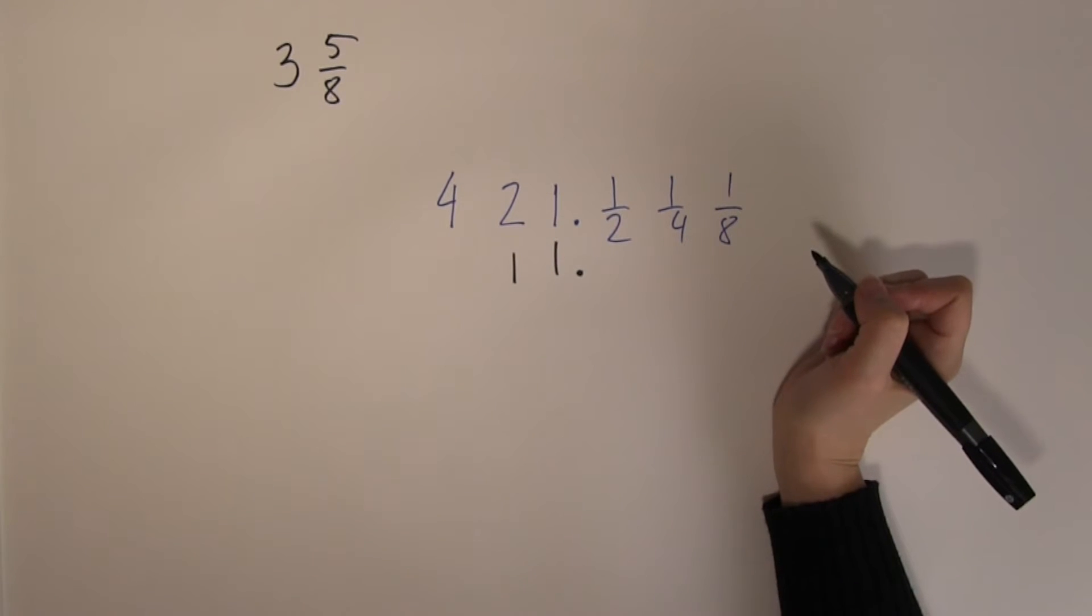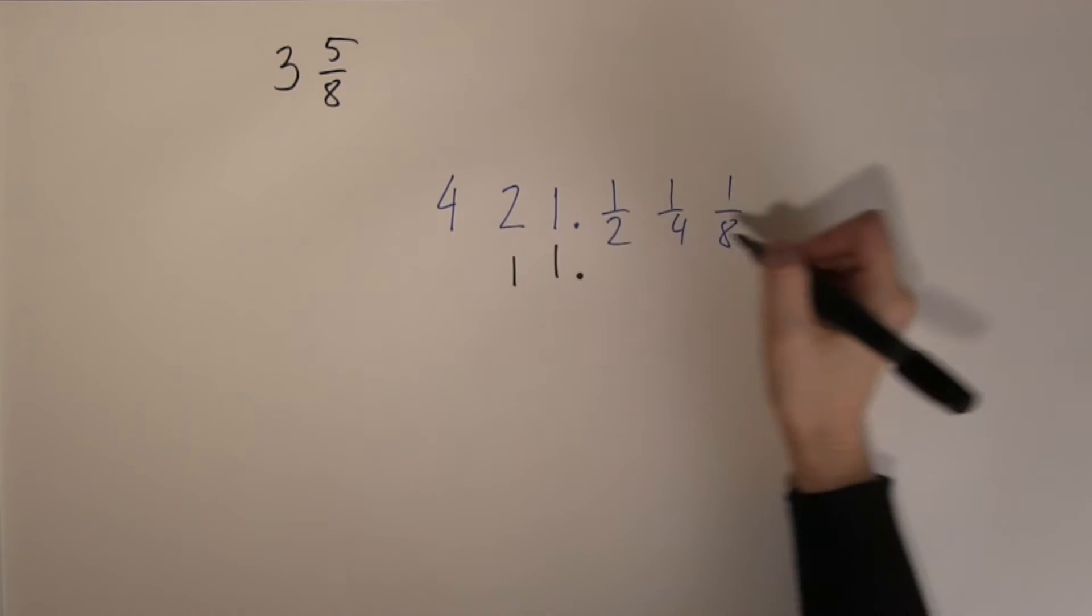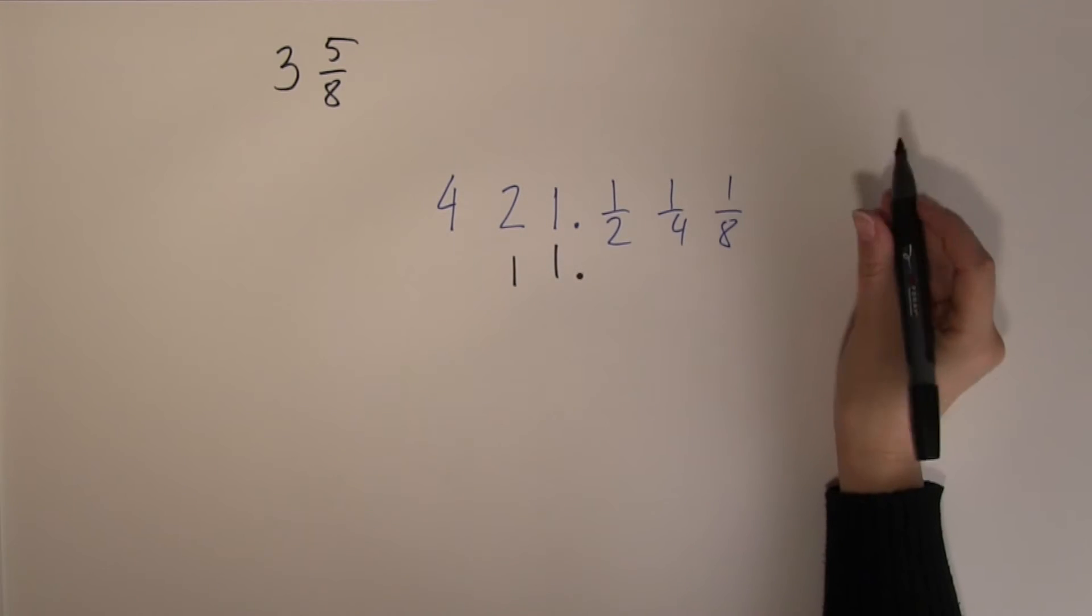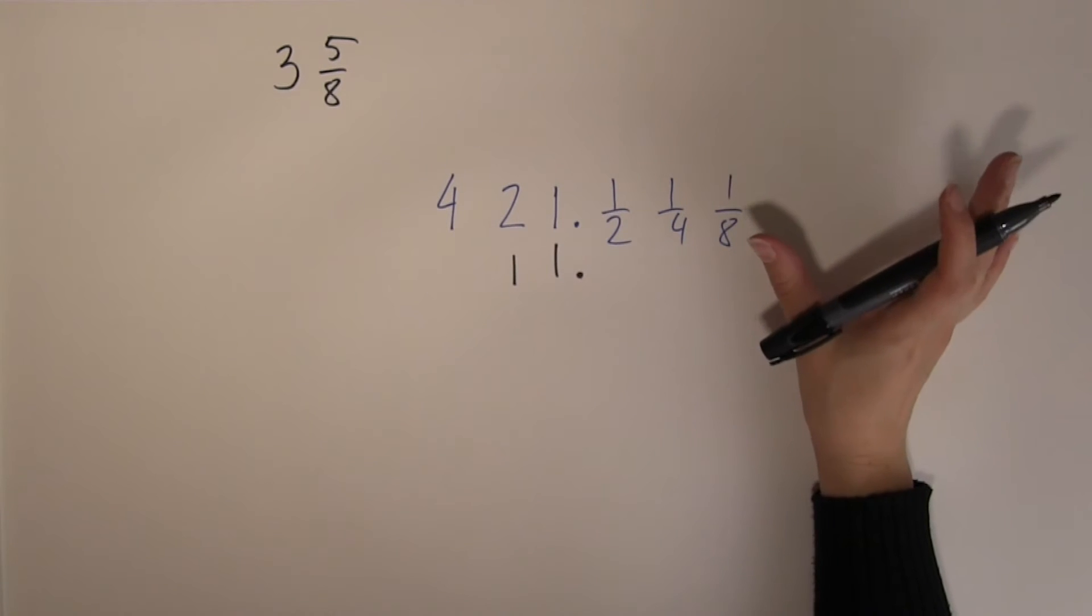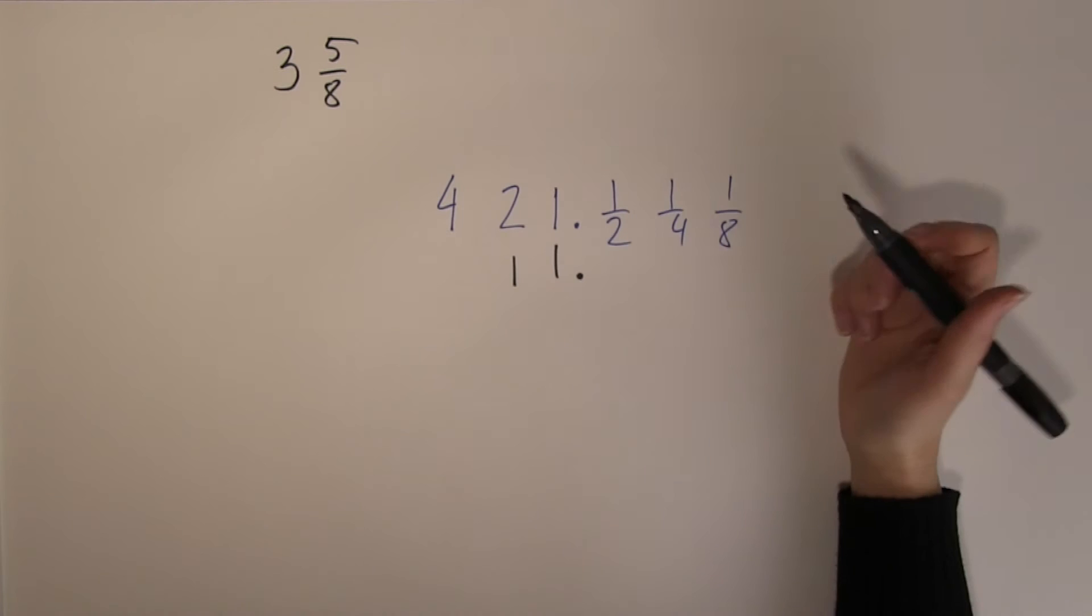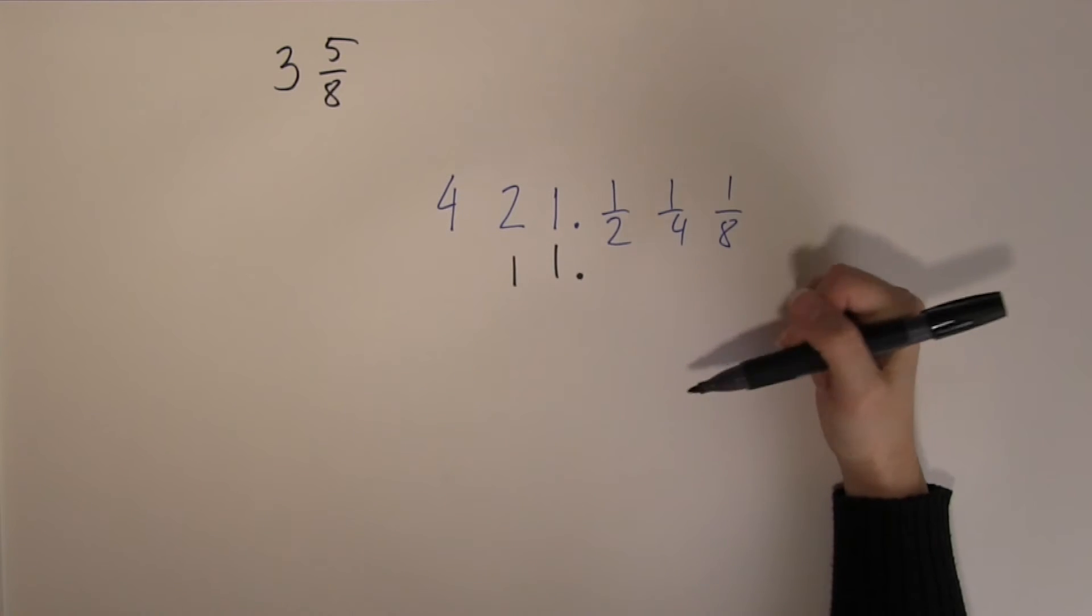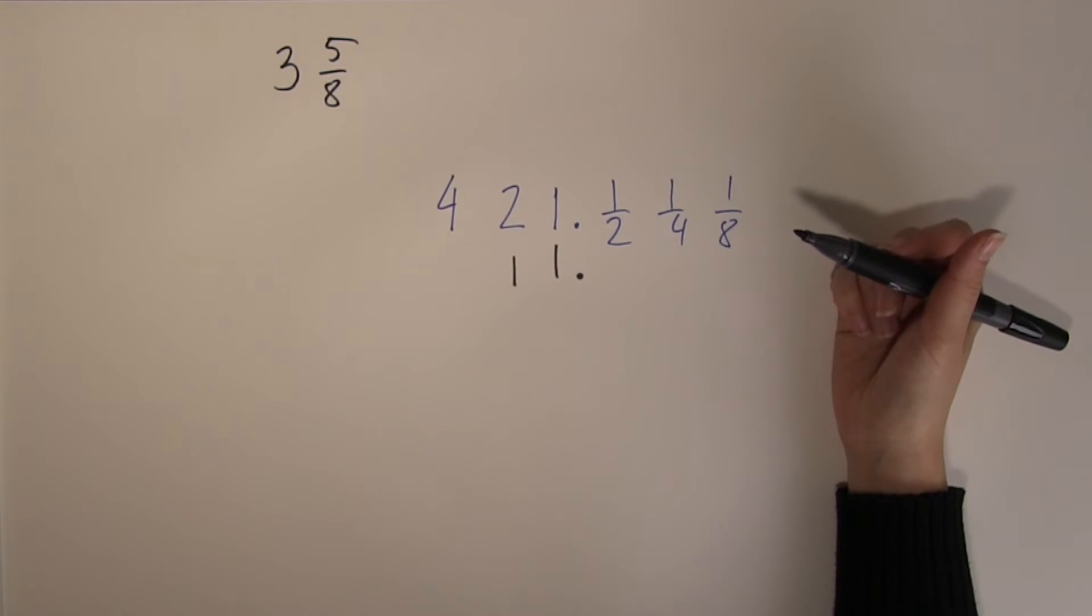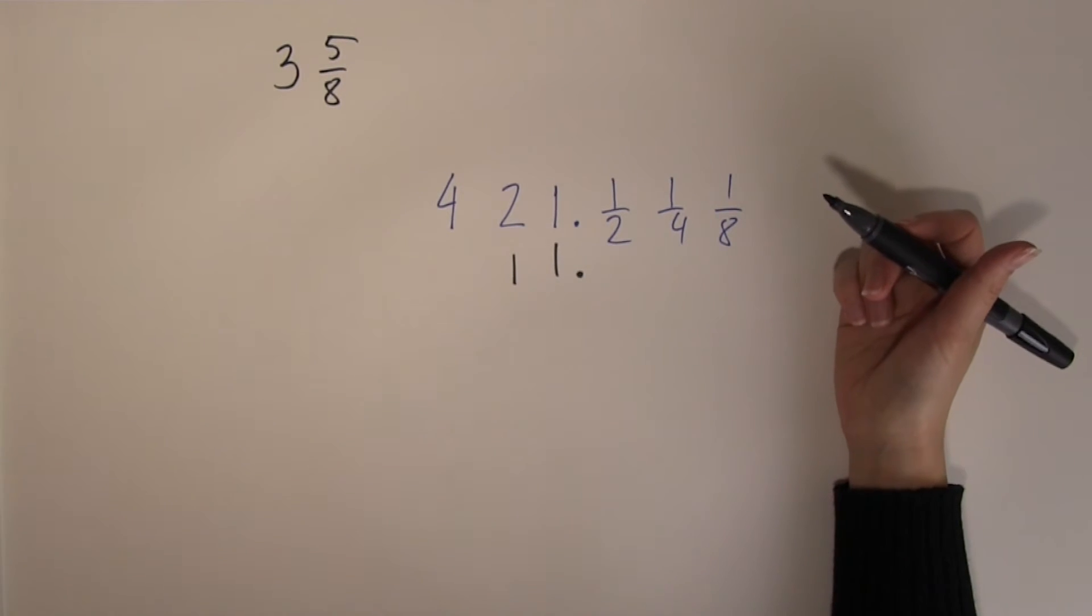But when it comes to 5 eighths, again I am going to be in a little bit of trouble to find out what combination is going on here. Therefore you need to have quite a good understanding of manipulating fractions, adding and subtracting them. If you are not sure, please do recap these. There are loads of very good online resources that you can recap on how to add and subtract fractions.